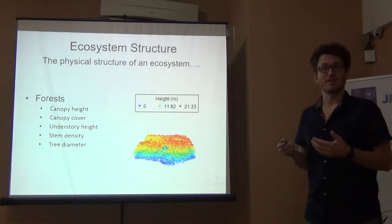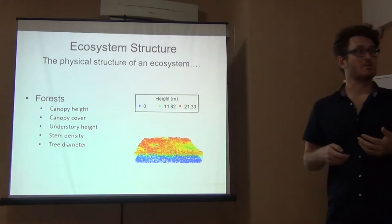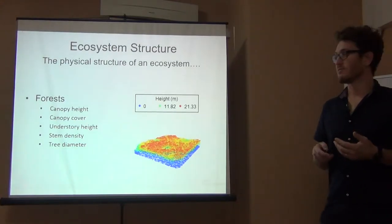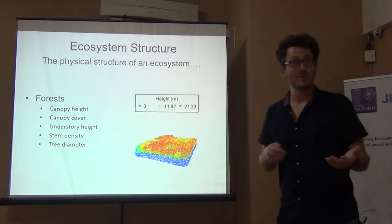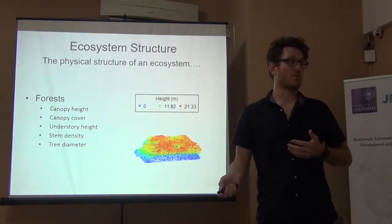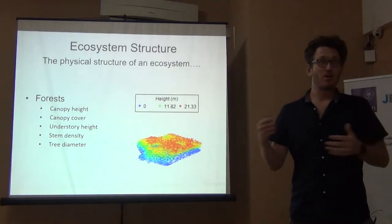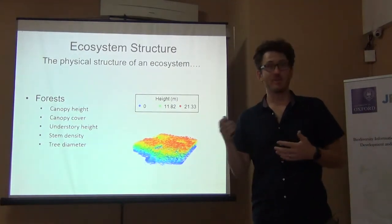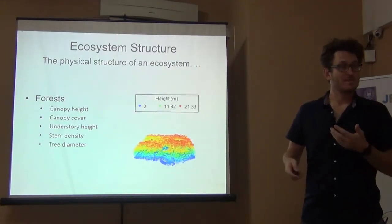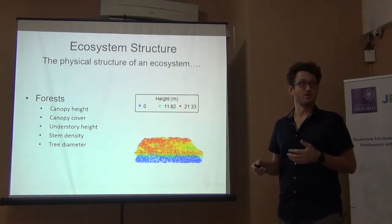When we know things like that, we can tell a lot about how that ecosystem functions. We know certain forests have a certain canopy height — they're good for certain birds or certain monkeys. But if they don't have that canopy height, those species can't use that habitat in the same way. So this tells us a lot about how a forest ecosystem will function.